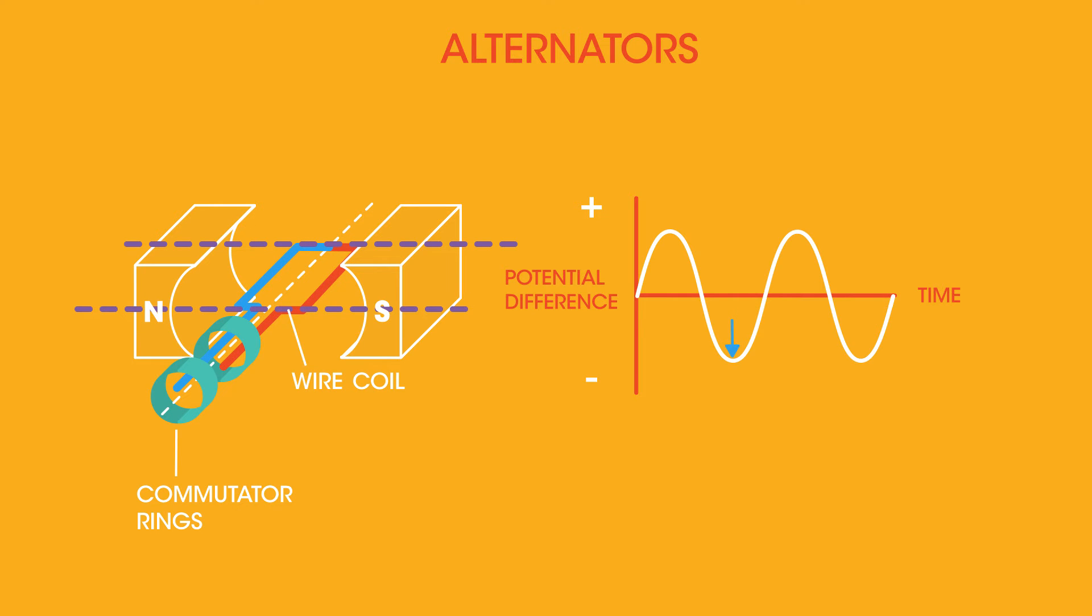Because the two sides of the coil are now moving in the opposite direction to what they originally were, so the blue wire is now moving down and the red wire is now moving up, the potential difference has reversed direction. It's now negative, hence we have alternating current.